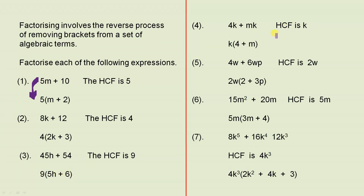Next example. What's the highest term, either a number or a letter or a combination, that divides into both of those? Straight away you can see that it's k. Put the k outside the brackets. k times what gives you 4k? The answer's 4. k times what gives you mk? The answer's m. So that's the answer.